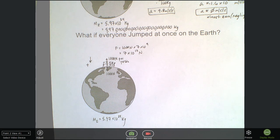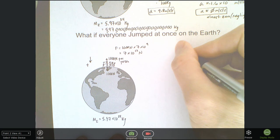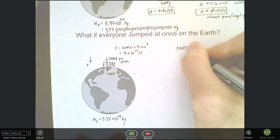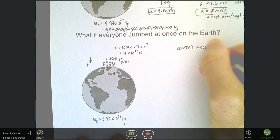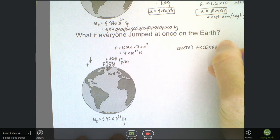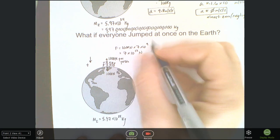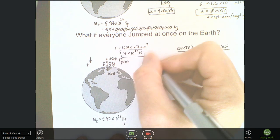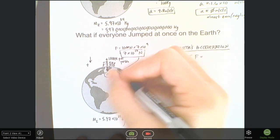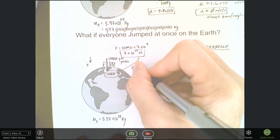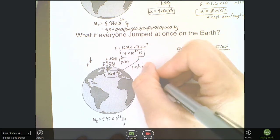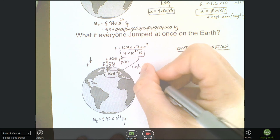That means the earth should experience that. So let's figure out the earth's acceleration. So everybody jumps, and we've got about 7 times 10 to the 12 newtons of force pushing down. And we'll assume that's this number here pushing down on earth.